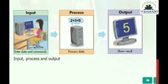For example, 2 plus 3 is the input — we enter the data and the command is plus. The CPU will process the data, meaning it will add the two numbers, and then the monitor shows the result: the answer is 5. That is input, process, and output.